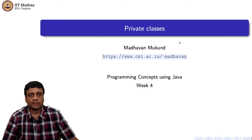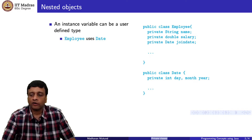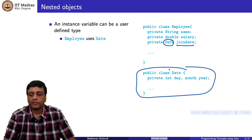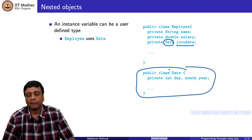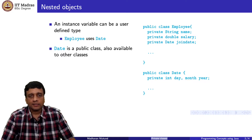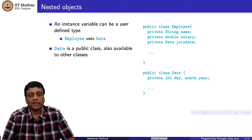Let's look at something which doesn't seem normal at first sight: a private class. We have seen that objects can contain other objects in their instance variables. For instance, when we create an Employee, we might want to record the joining date, and that joining date can be recorded using another class called Date, which has its own instance variables — day, month, and year. Date is a public class available to other classes throughout the system.